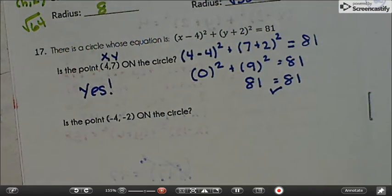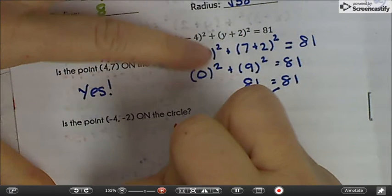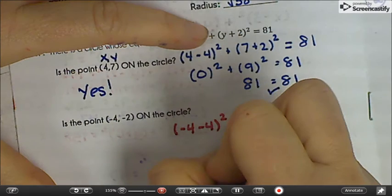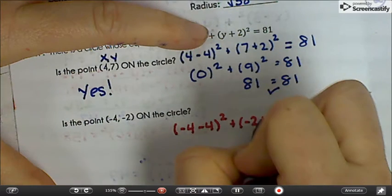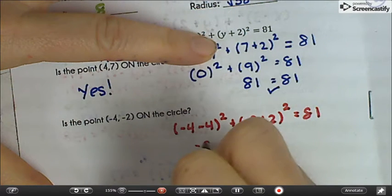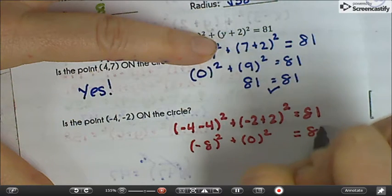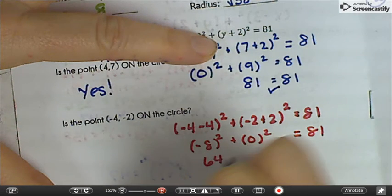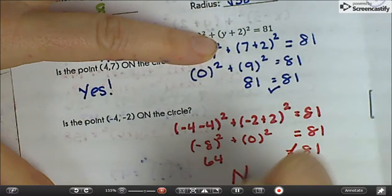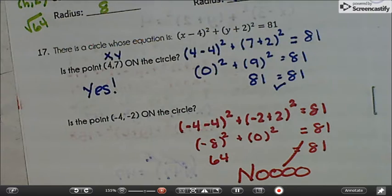All right. Please pause the video and try the second problem. Hopefully you said no. No, that's not a point on the circle. It does not equal, so it doesn't make sense.